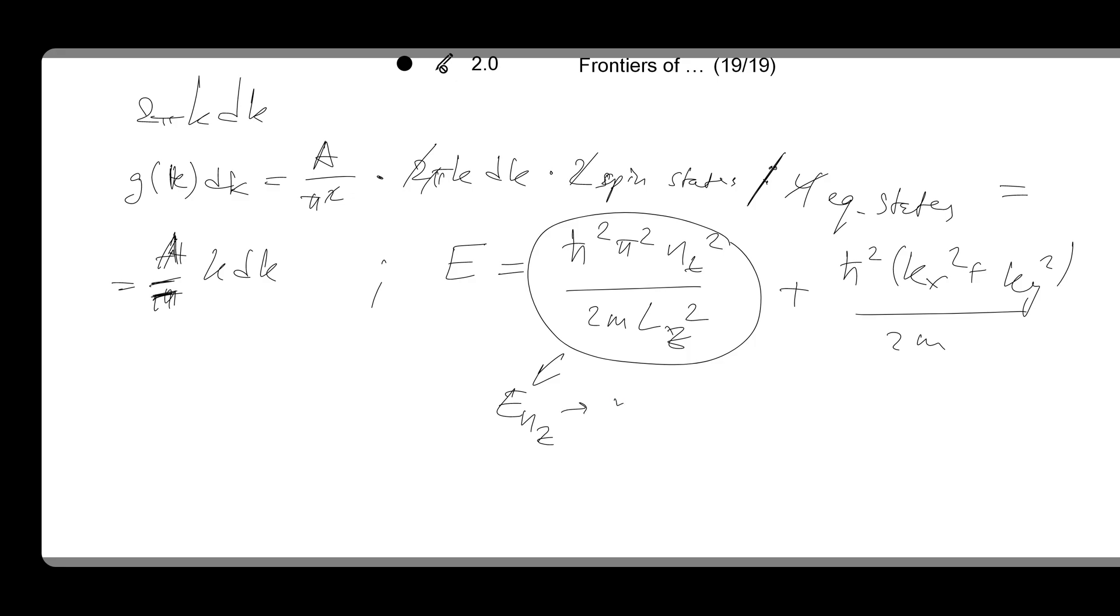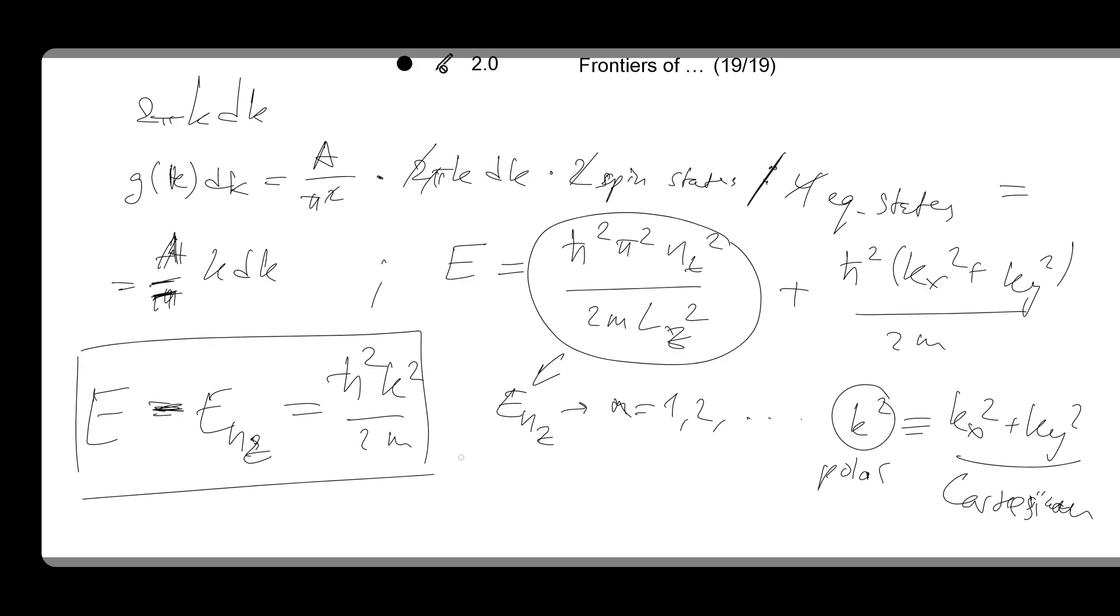So the n here is 1, 2, and so on. And then if we use polar coordinates instead of cartesian, your k squared in polar is the same. Polar is as kx squared plus ky squared in cartesian. And the dispersion relation, and finally putting all things together, E equals E minus Enz will be h-bar squared k squared over 2m. That's the dispersion relation, and that's our density of states.